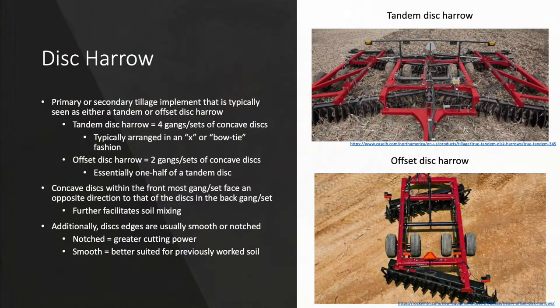Disc harrows are a primary or secondary tillage implement that is typically seen as either a tandem or offset disc harrow. The tandem disc harrow consists of four gangs or sets of concave discs typically arranged in an X or bowtie fashion. The offset disc harrow only consists of two gangs or sets of concave discs and is essentially one half of a tandem disc harrow. The angle of the gangs or sets of discs can be altered to be either more or less parallel to each other. Additionally, the concave discs within the front most gang face an opposite direction to that of the discs in the back gang. This helps to further facilitate soil mixing as the soil is being thrown by the discs in two different directions.